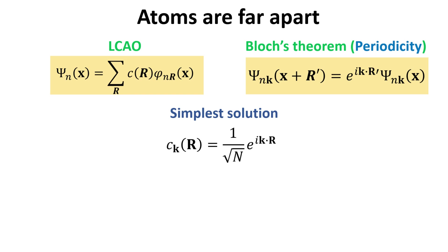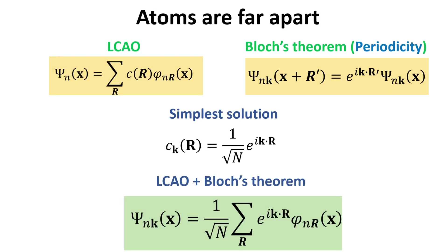From this condition, we see that the coefficient C must have the same property of exponential under the sum of its arguments. Hence, we choose the simplest representation for the coefficient C obeying this property as a constant times an exponential phase factor of k dot R. Here, n is chosen to be the number of unit cells, which determines the spacing between different crystal momenta as described by the periodic boundary conditions for the wave function discussed in previous videos. This particular choice of the coefficient therefore ensures normalization for the Bloch states.